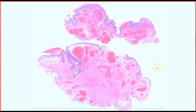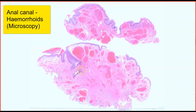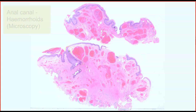Hello, this is a virtual microscopy slide of a case of hemorrhoids in the anal canal. Here we can see two polypoid tissue pieces that are covered by stratified squamous epithelium. These are serial sections from the same specimen.